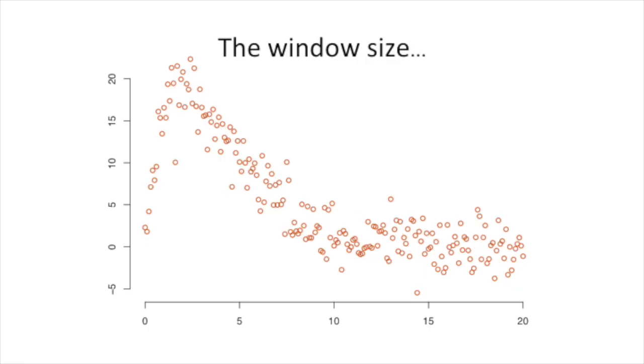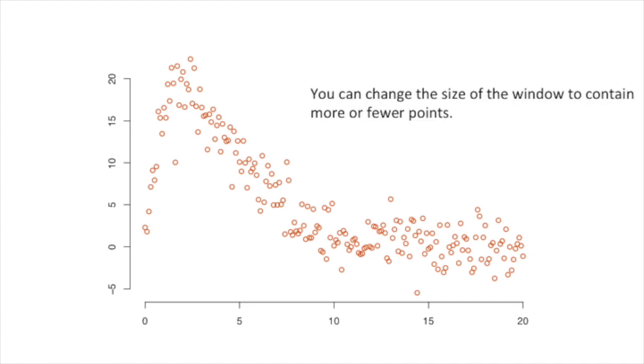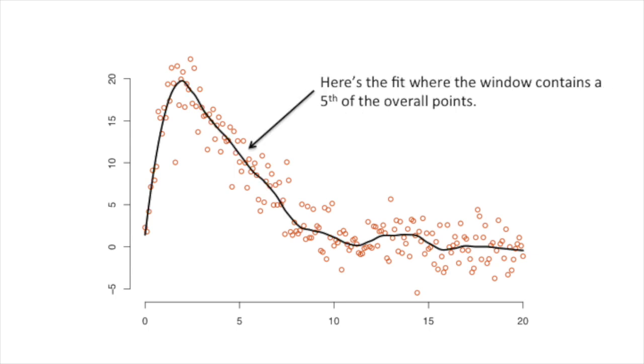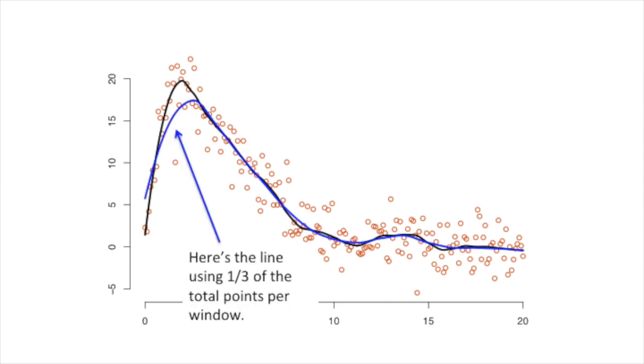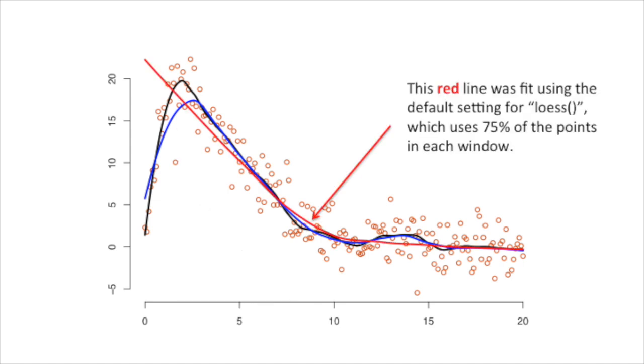It's also worth talking about the window size. You can change the size of the window to contain more or fewer points. The choice is yours. Here's the fit where the window contains a fifth of the overall points. Note, instead of specifying the exact number of points, you usually specify the proportion of the total. Here's the line using one third of the total points per window. This red line was fit using the default setting for loess, which uses 75% of the points in each window.